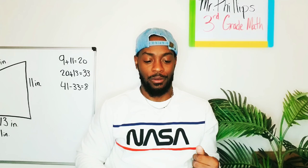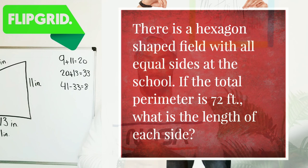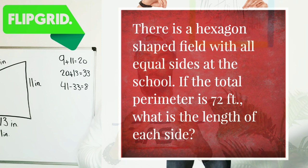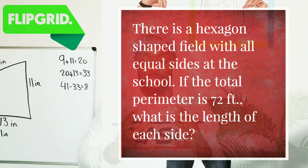So now let's jump into our Flipgrid question of the day, guys. I want to see your videos on this one, so let's check this out. There is a hexagon-shaped field with all equal sides at the school. If the total perimeter is 72 feet, what is the length of each side? This is the question I wanted to see you guys do your Flipgrid videos on. So jump into that. I can't wait to see your videos.